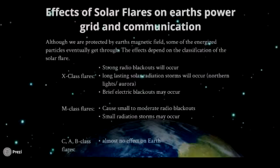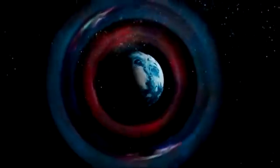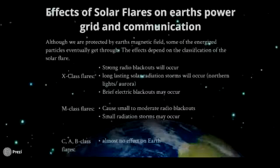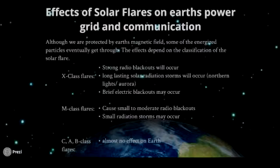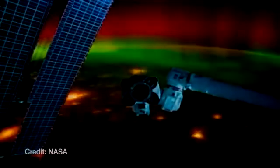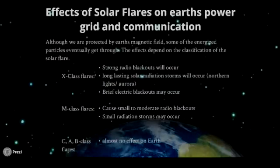Solar flares do have an effect on Earth's power grid and communication. Although we are protected by Earth's magnetic field, some of the energized particles eventually get through. The effects depend on the classification of the solar flare. X flares would cause strong radio blackouts, long-lasting solar radiation storms — which are northern lights or sometimes called aurora — and also cause brief electricity blackouts. M class flares can cause small to moderate radio blackouts, and can sometimes cause small radiation storms.